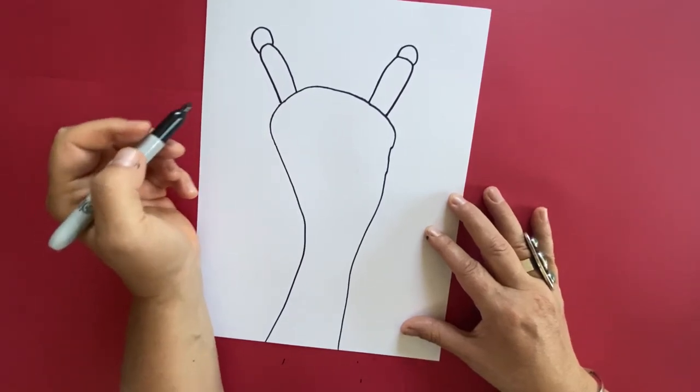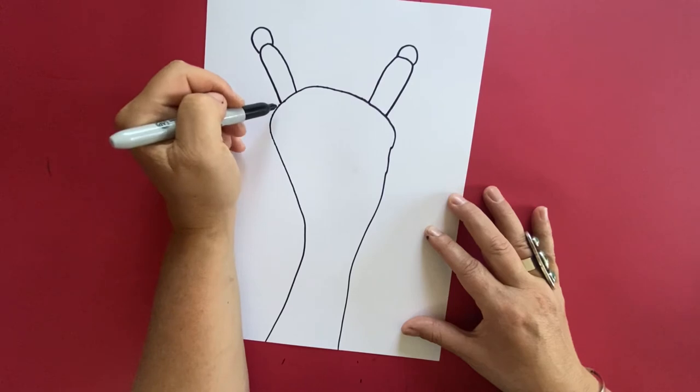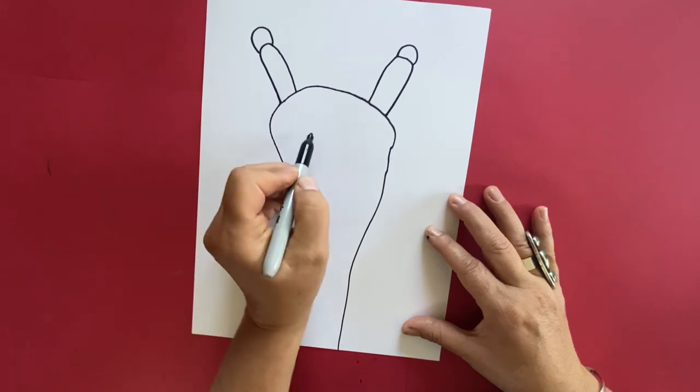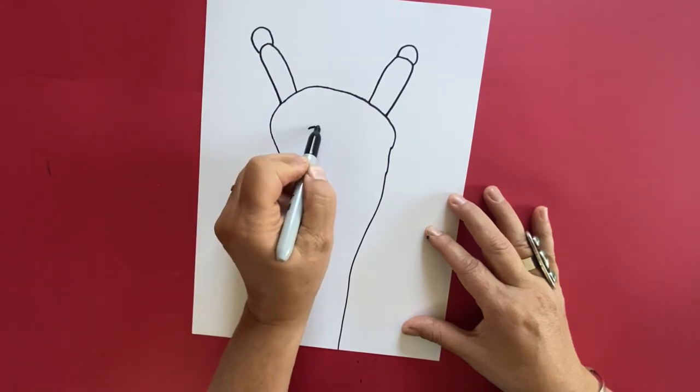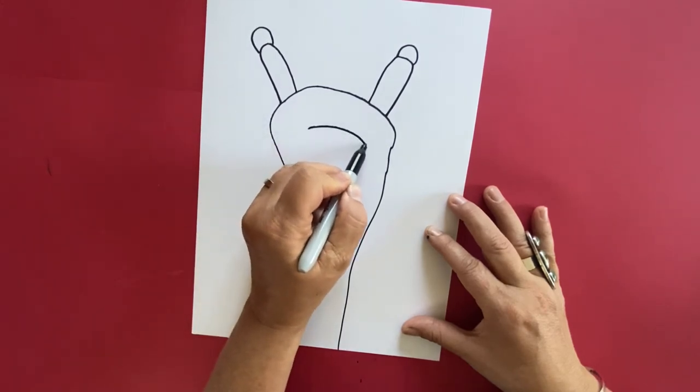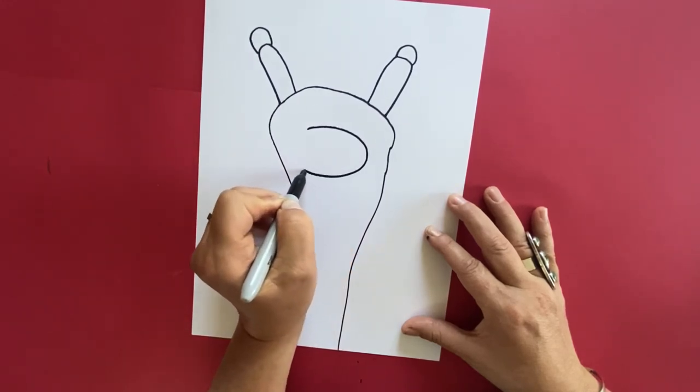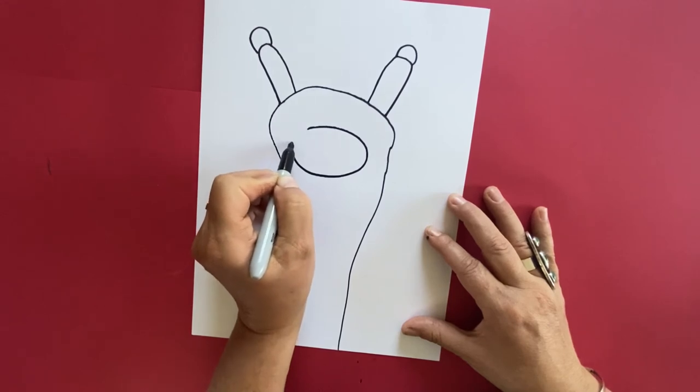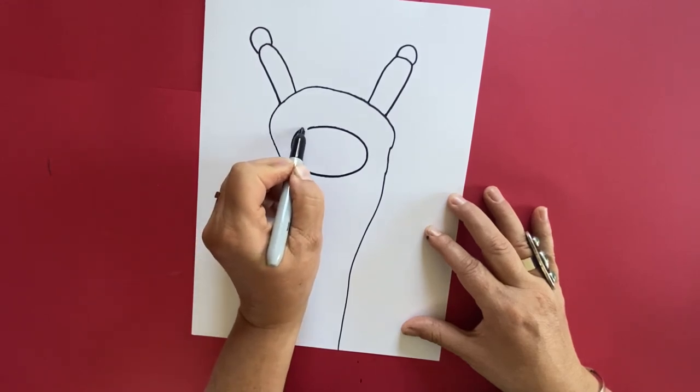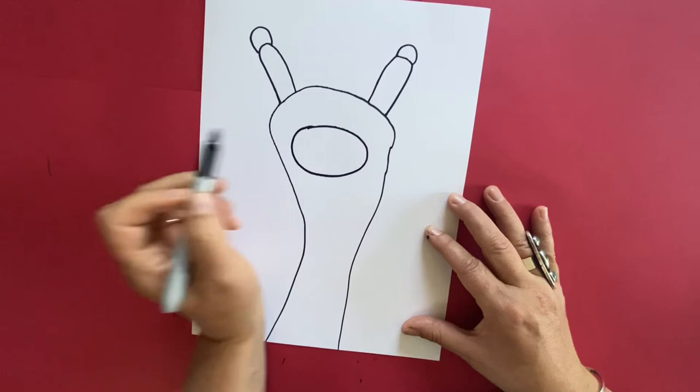The next thing we're going to do is we're going to draw the giraffe's muzzle. We're gonna make a large oval in the middle of our giraffes face. It's where we're going to put the nostrils and a little smiley face so a simple oval perfect.